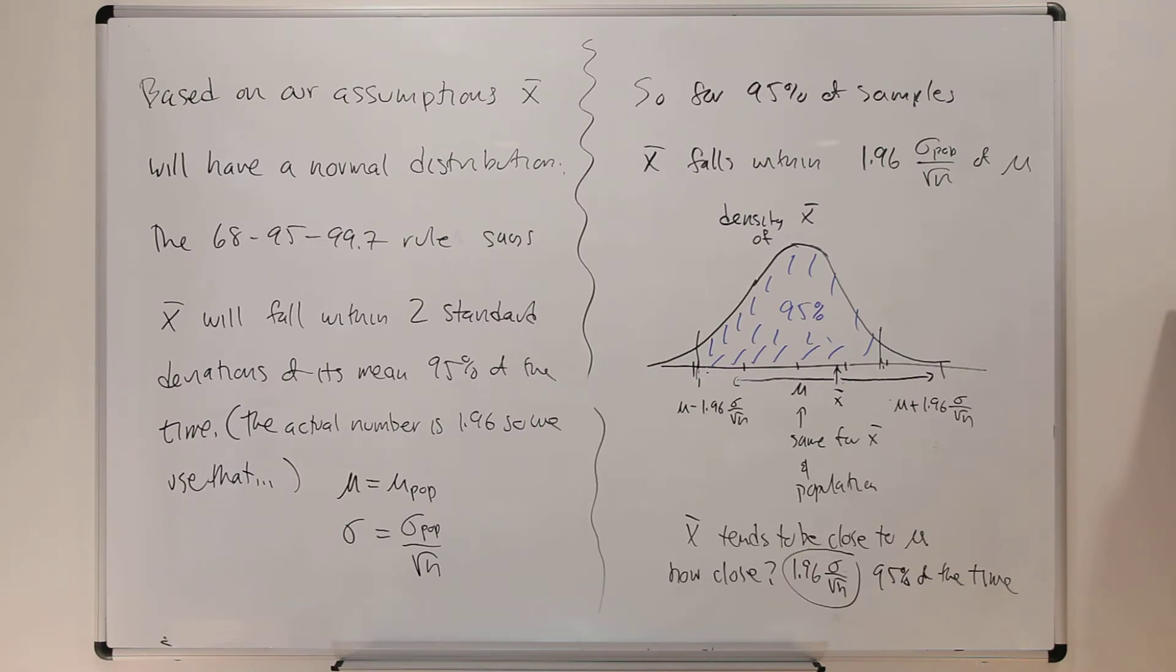We need simple random sampling, normal population, small sample size, known standard deviation. But for x-bar to be normal, we just really need a normal population.